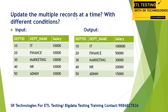The task is to update multiple records at a time with different conditions. The input given: department IDs are 10, 20, 30, 40, 50. Department names are IT, Finance, Marketing, HR, and Admin. Initially salary is set as default 10,000. Now they want to set a standard initial salary whenever a new employee joins — department 10: 1 lakh, Finance: 50,000, Marketing: 30,000, HR: 20,000, Admin: 15,000.